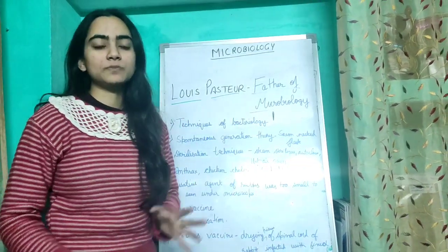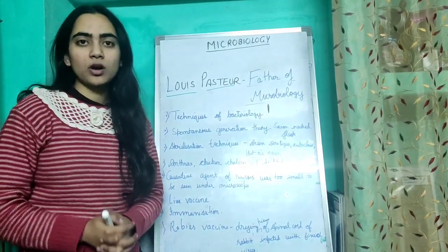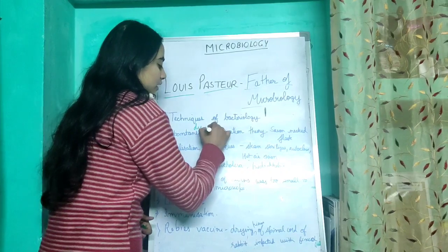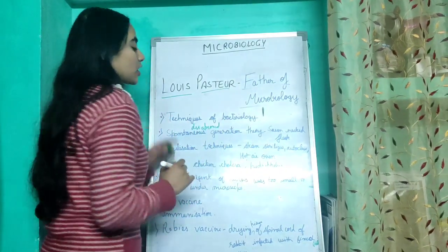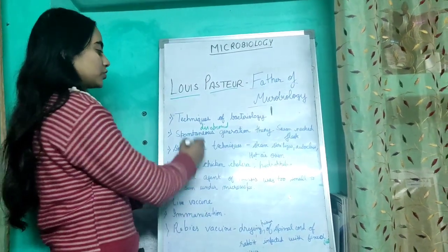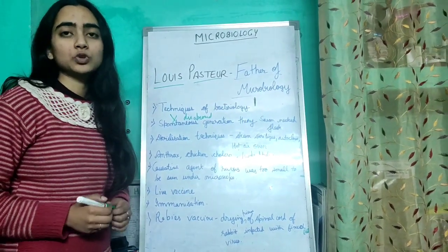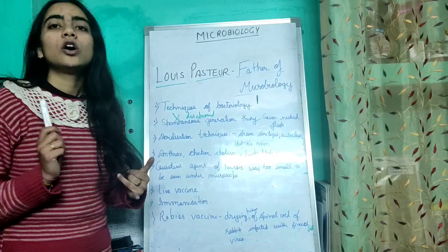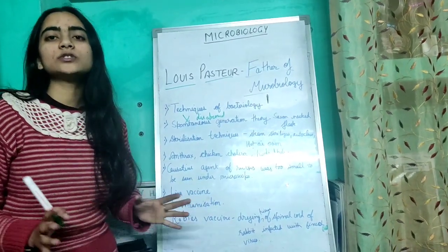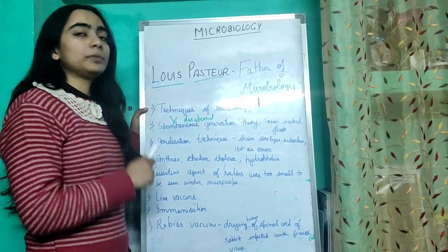For Louis Pasteur, first are techniques of bacteriology. Second, he disproved the spontaneous generation theory through the Swan Neck Flask experiment. Third are sterilization techniques — the principles of autoclave, hot air oven, and steam sterilizers are attributed to Louis Pasteur. After that, anthrax, chicken cholera, and hydrophobia organisms were all studied by Louis Pasteur.